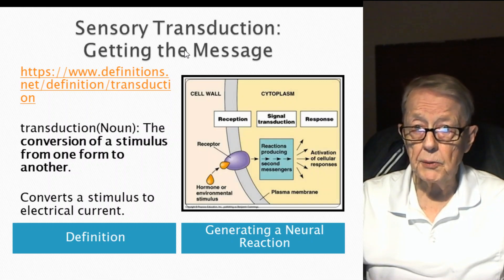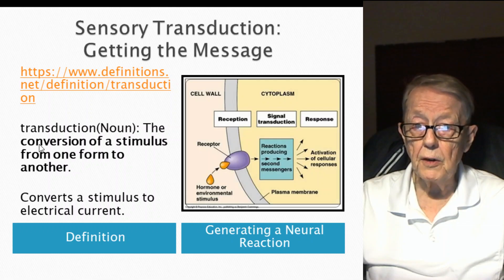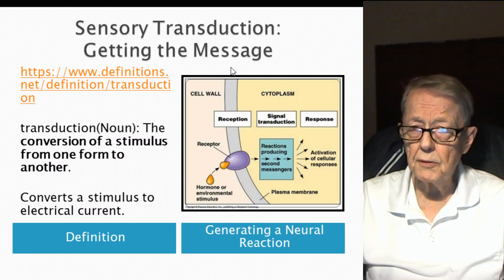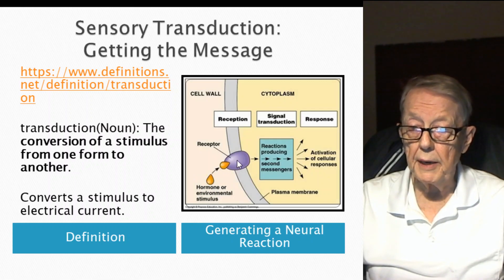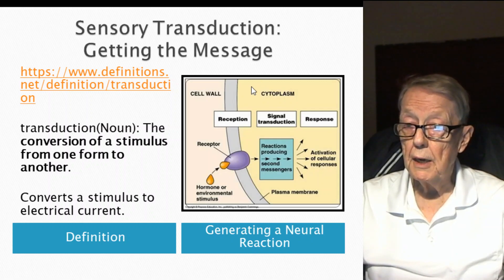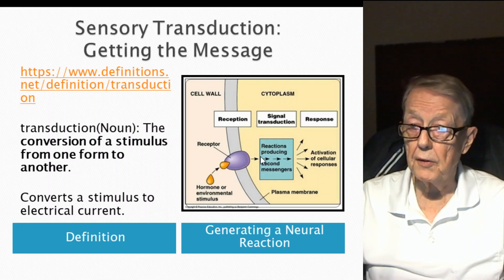The first one is titled Sensory Transduction. What is transduction? A definition of transduction as a noun is the conversion of a stimulus from one form to another. In many cases in the film, it's described as the stimulus being converted to an electrical signal. Here's a very generalized symbol of transduction: a hormone or some environmental stimuli is captured by a receptor, a transformation occurs — a chemical event — generating a signal that causes a response. A simple example is the knee-jerk test that your doctor might do, which I'll cover at the very end.